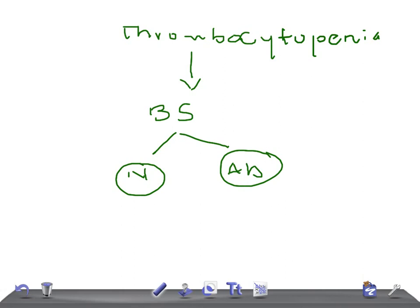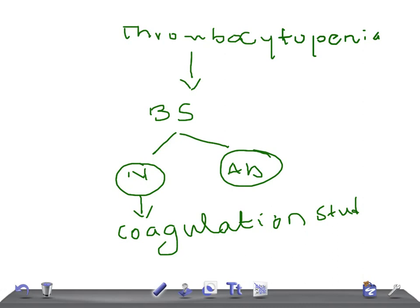If the blood smear is normal, then look for coagulation studies. Two things can happen with the coagulation study: either it can be normal or it can be abnormal. If it's abnormal, then think of only one disease — DIC, disseminated intravascular coagulation. It's a really very important, very dangerous, very fatal disease.